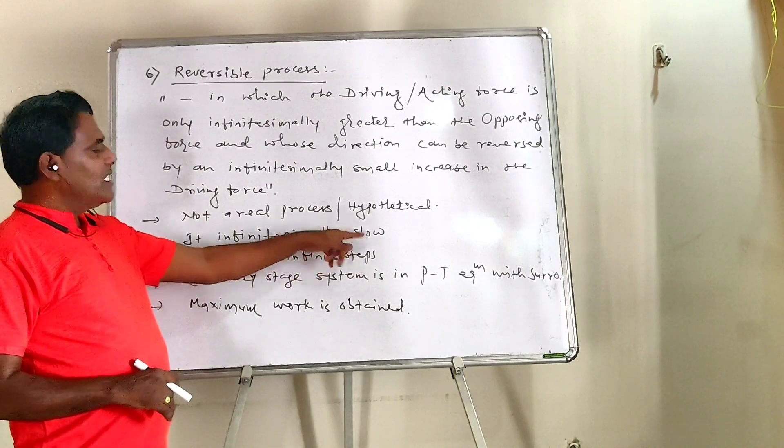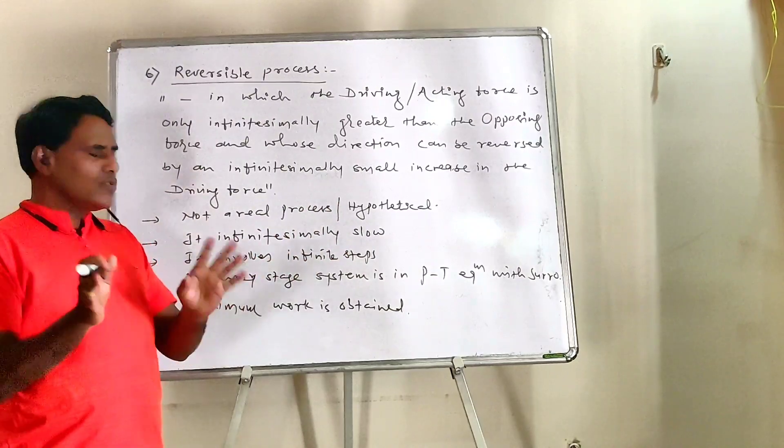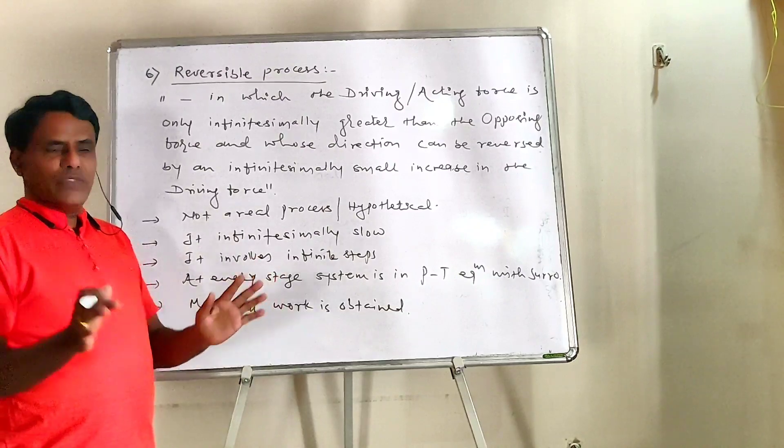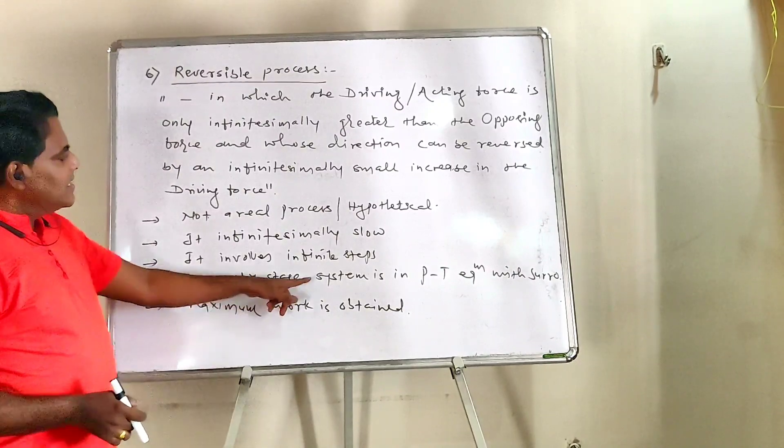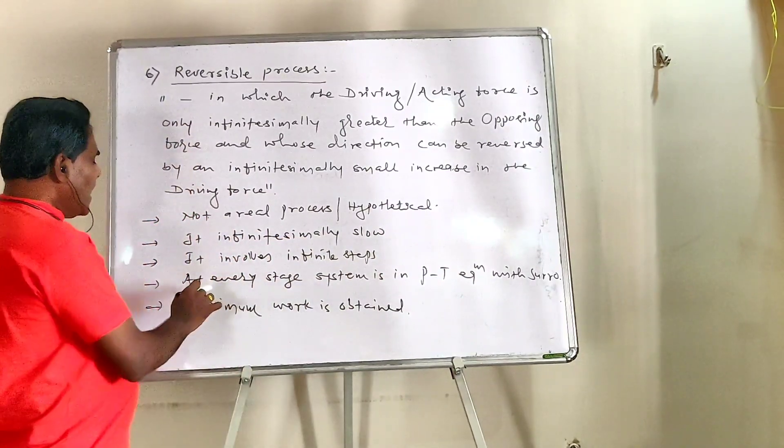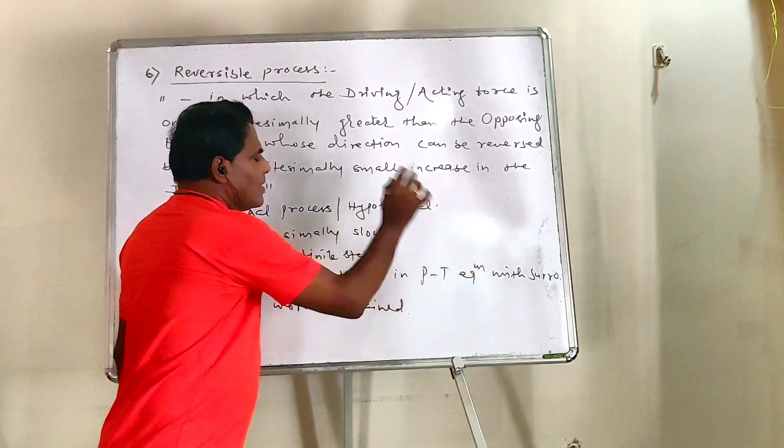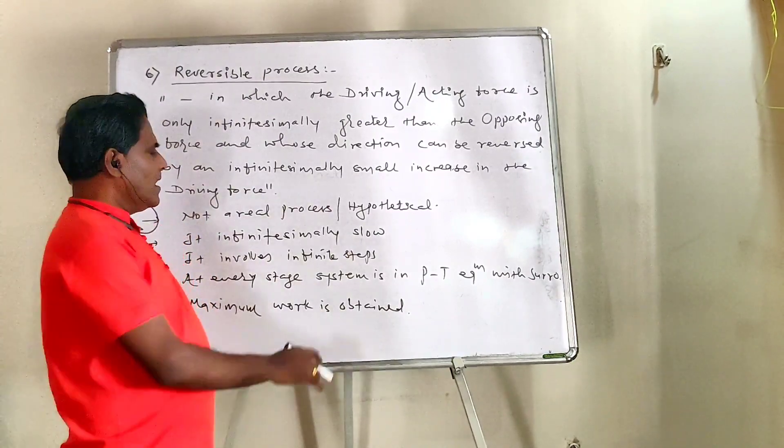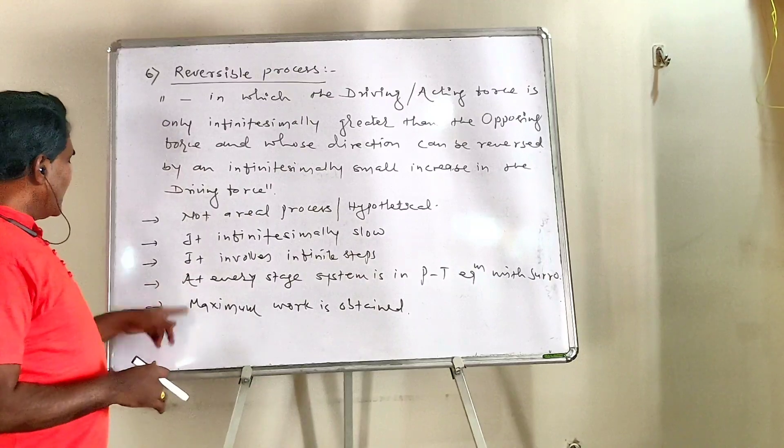It takes place infinitesimally slowly, it is an infinitesimally slow process. It involves infinite number of steps. At every stage, system is in pressure-temperature equilibrium with the surrounding. Every stage, system and surrounding's pressure-temperature will remain the same, equilibrium will be achieved.